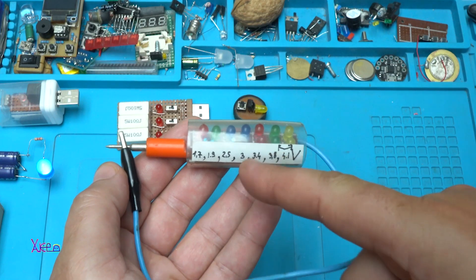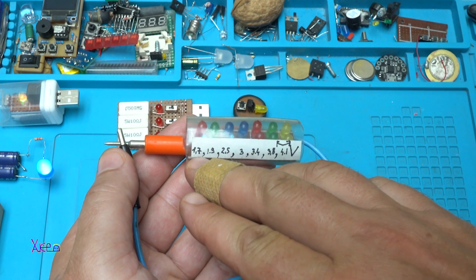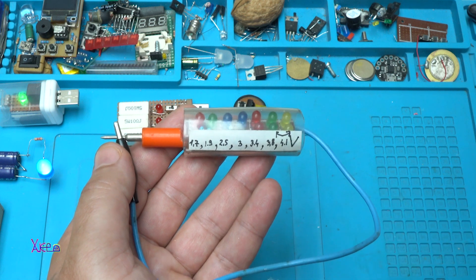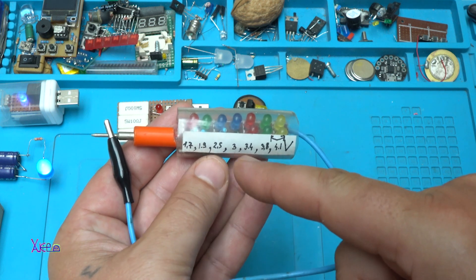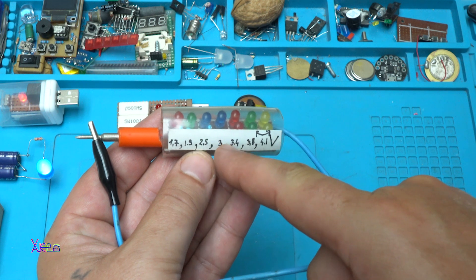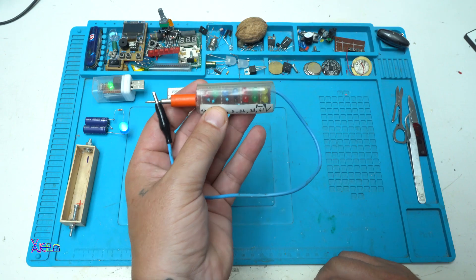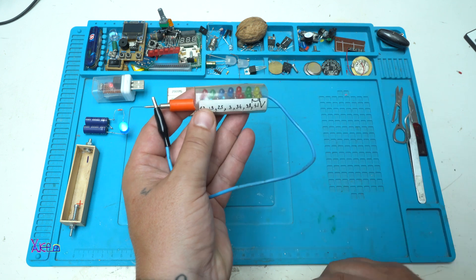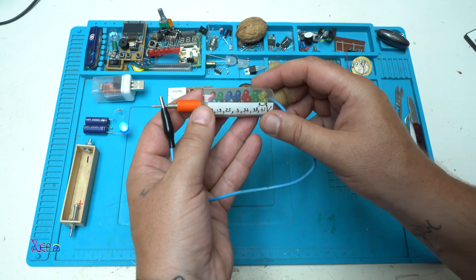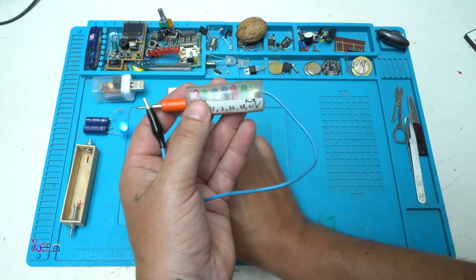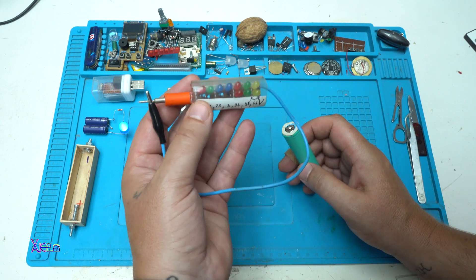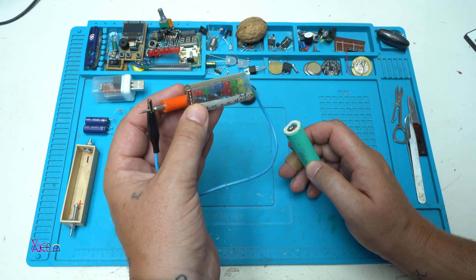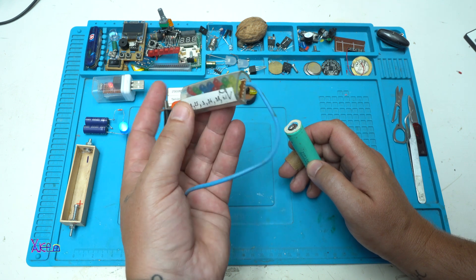You can see that I marked from 1.7 volts maximum to 4.1 or 4.2 volts and it has seven levels for displaying the voltage of the lithium battery. It's a very handy device. It's not a complicated electronic circuit. You can make it and use it.